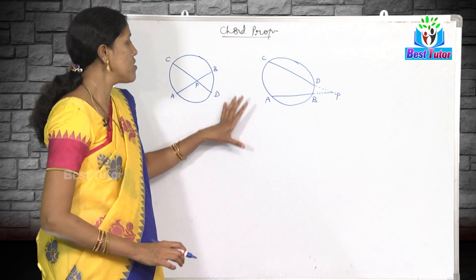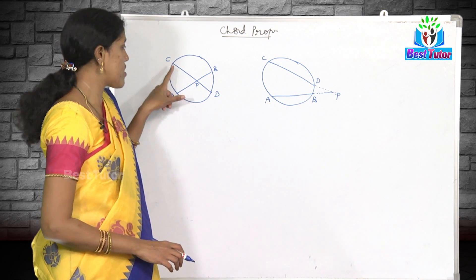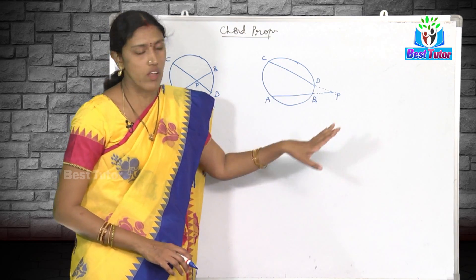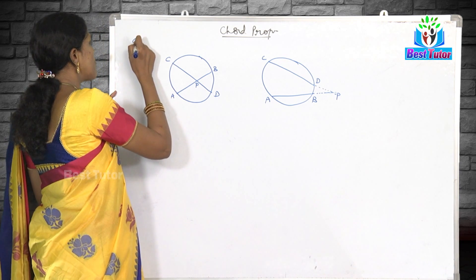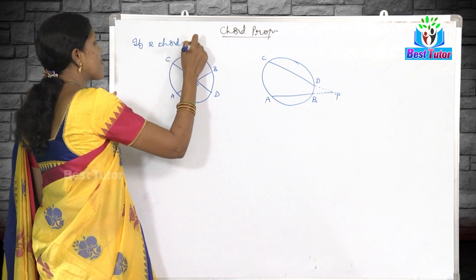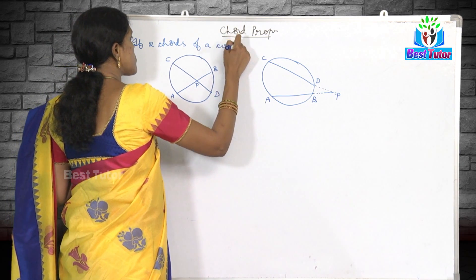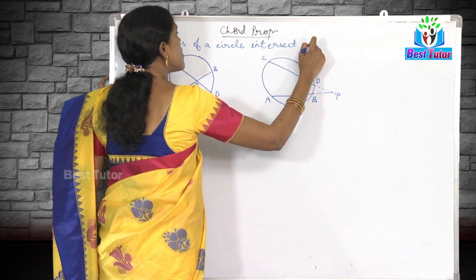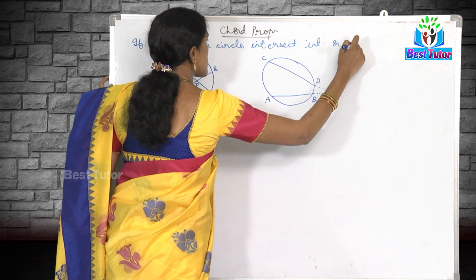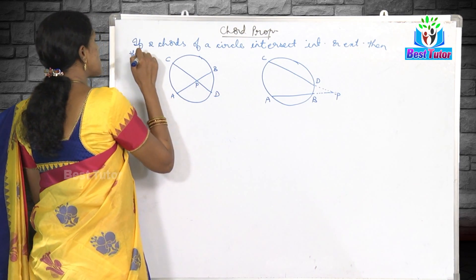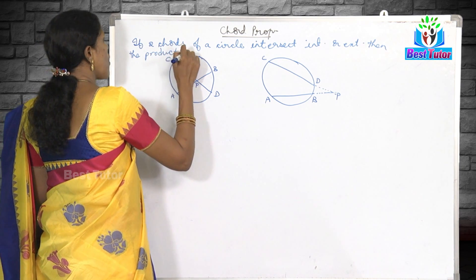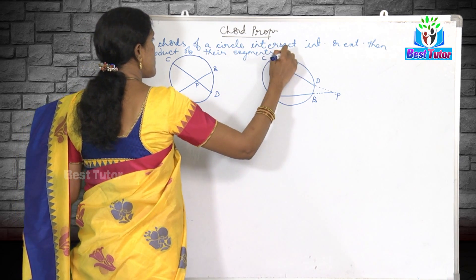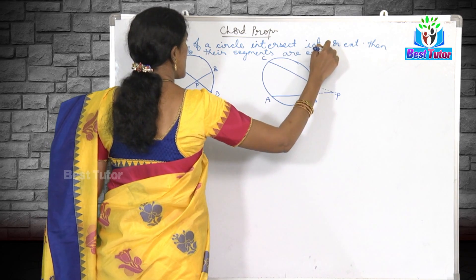The proof remains the same for both possibilities. Here two chords are intersecting internally; here two chords are intersecting outside the circle. The statement is: if two chords of a circle intersect internally or externally, then the product of their segments are equal. Let us consider the first case.